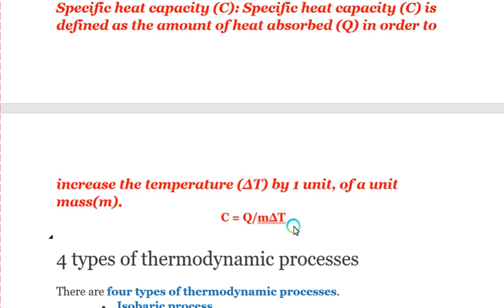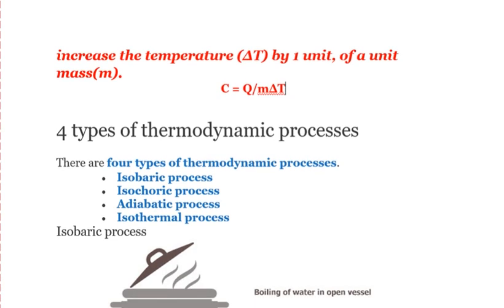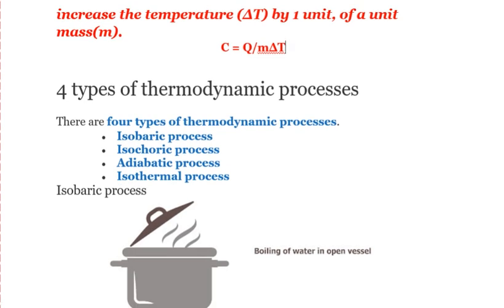Now the concept of heat capacity and specific heat capacity should be clear — when you change by one unit of a specific unit of mass, that is your specific heat capacity. Now let me introduce the types of thermodynamic processes. We have four thermodynamic processes: isobaric, isochoric, adiabatic, and isothermal processes.